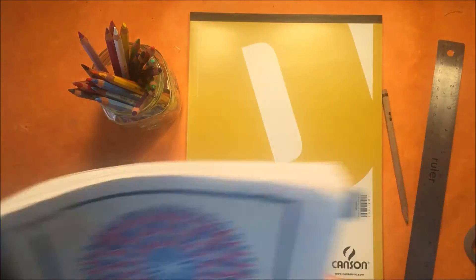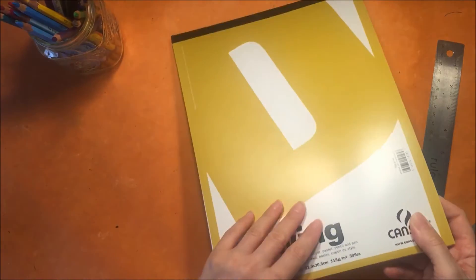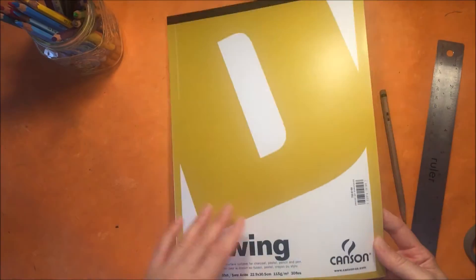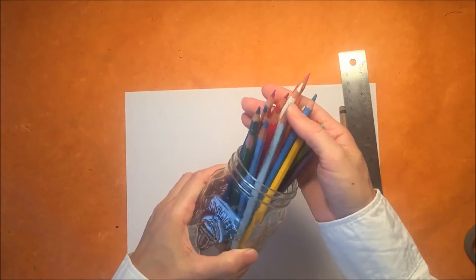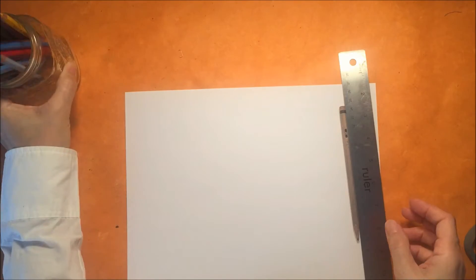For this project you will need some paper or watercolor paper. We're using 90-pound drawing paper by Canson, which you can find at local craft stores. We will also need a ruler, a pencil, and some colored pencils. These are watercolor pencils that we're using today.